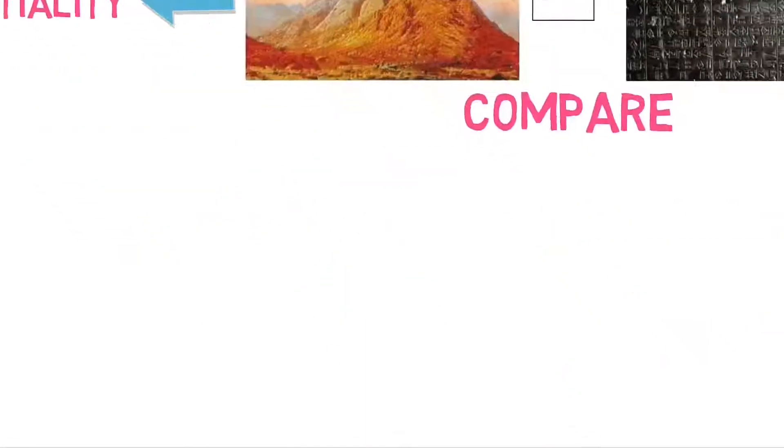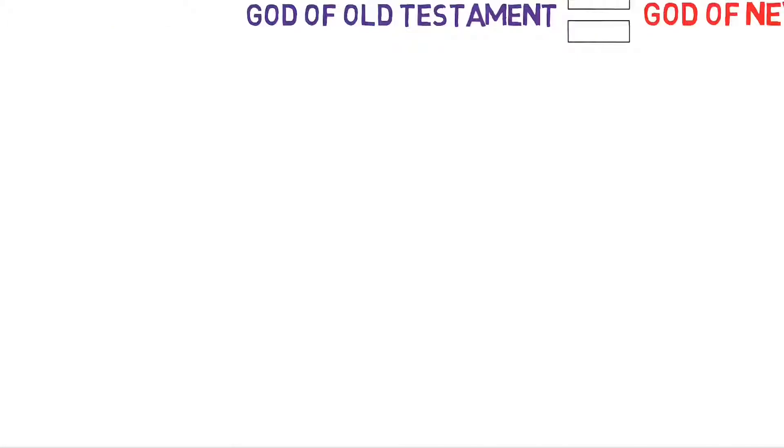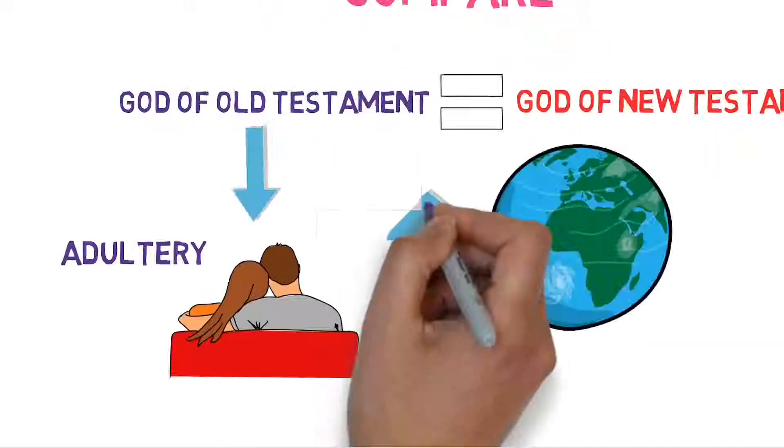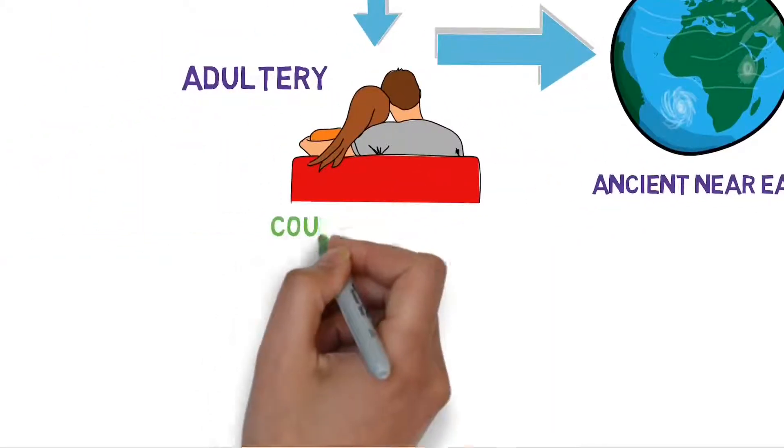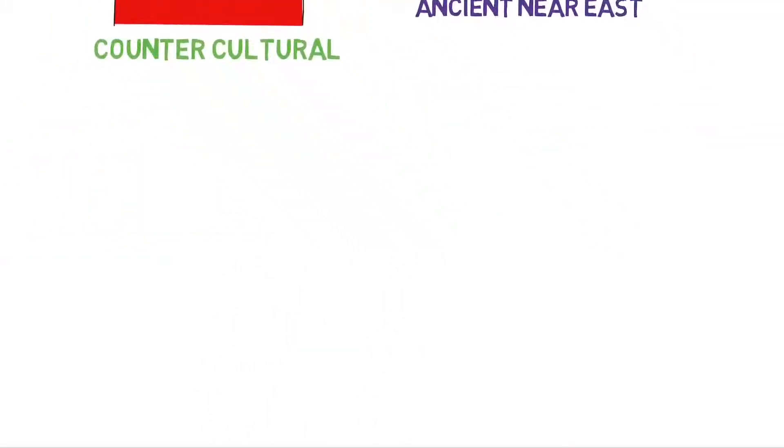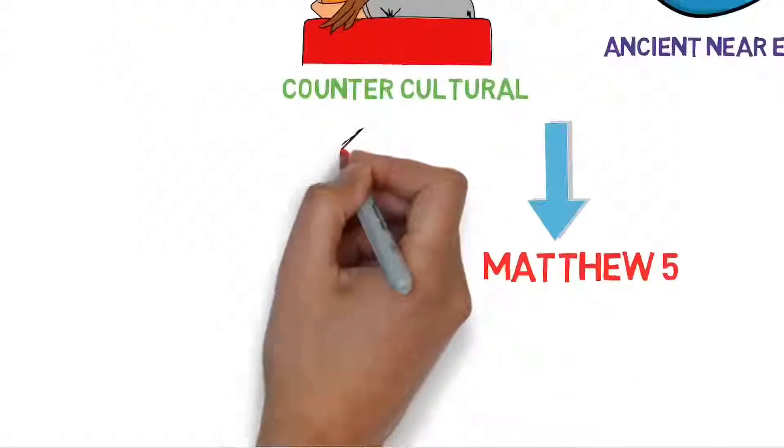Therefore, the God of Old Testament is same as the God of New Testament. What God said about punishment of adultery in Ancient Near East is counter-cultural, like what Jesus Christ said about adultery in Matthew 5.